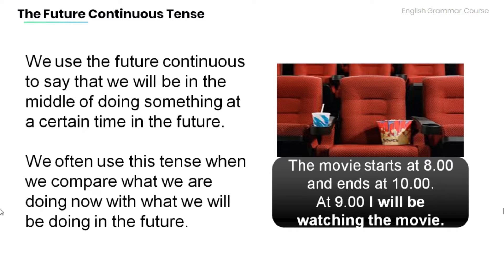Have a look at the example over here. The movie starts at 8 and ends at 10. At 9, I will be watching the movie. Now the future continuous tense is used in this sentence to talk about what I will be doing in the near future.